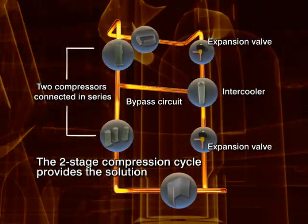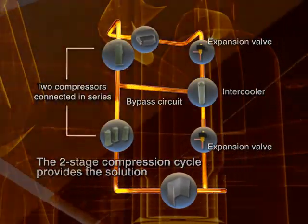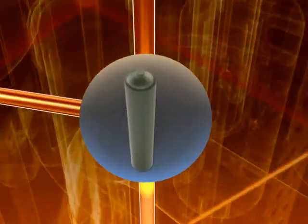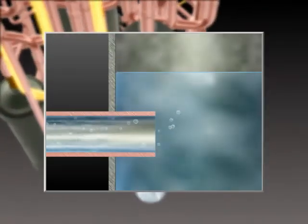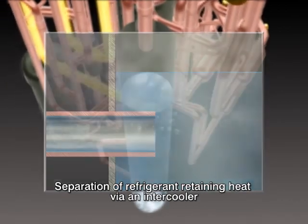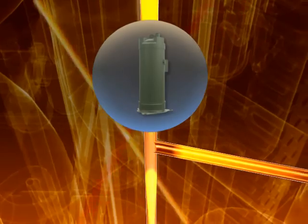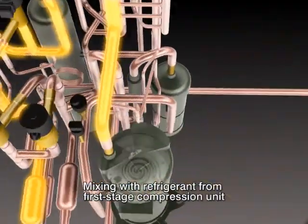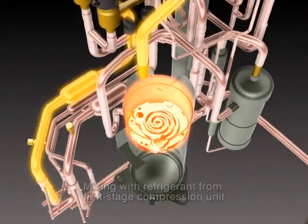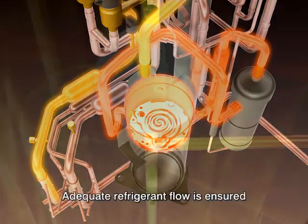Daikin's unique two-stage compression cycle solves this problem. In heating mode, refrigerant retaining heat is separated by an intercooler and is then channeled through a bypass circuit, mixing with refrigerant from the first stage compression unit and ensuring adequate refrigerant flow.